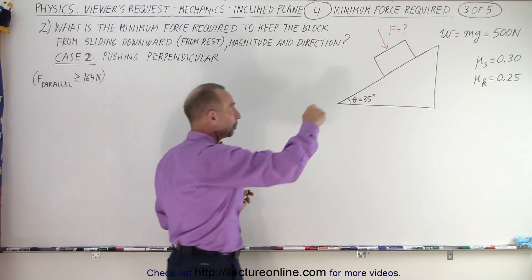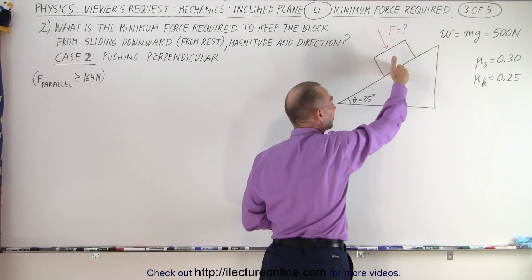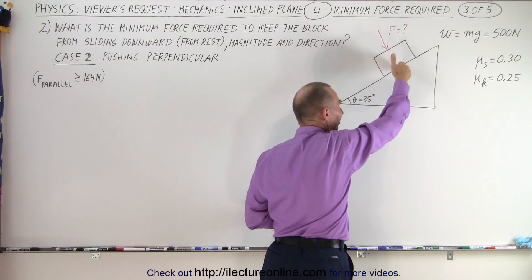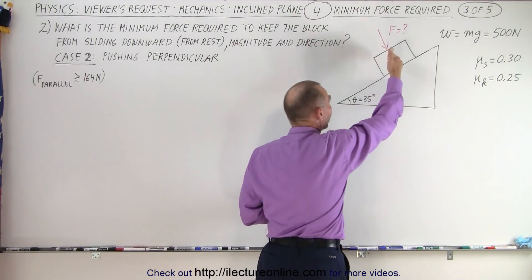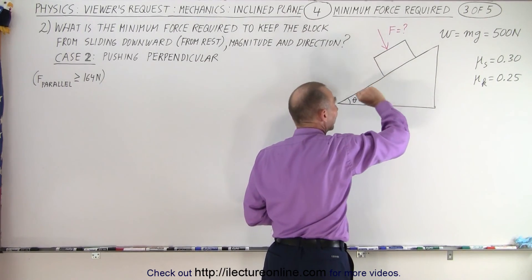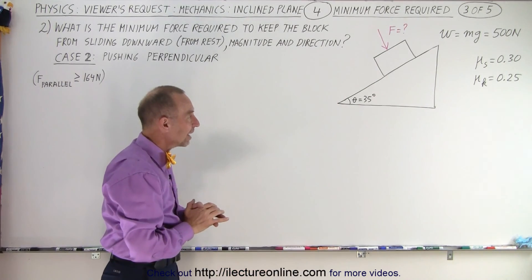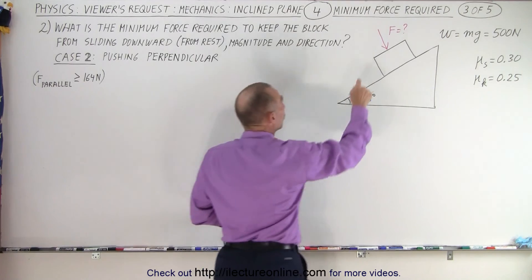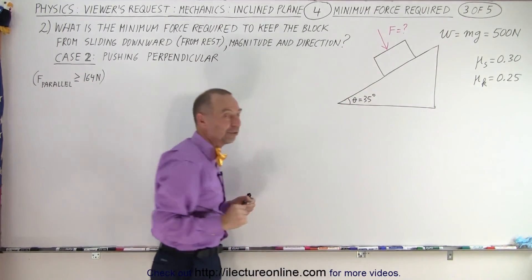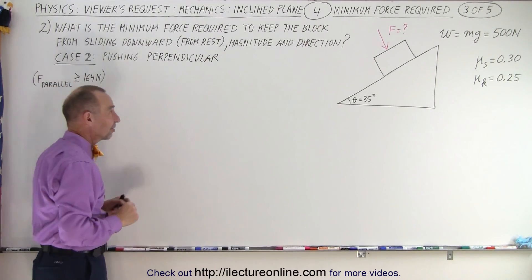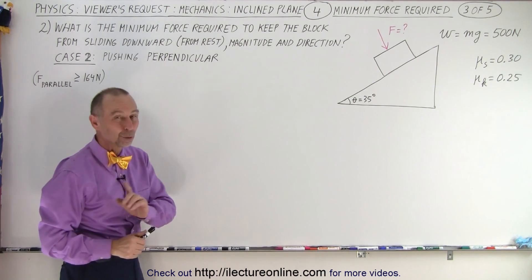By pushing perpendicular against the block, we simply increase the component of the weight that pushes the block against the incline, causing friction to exist. We then cause additional force pushing against the incline, therefore additional friction force, and that should be sufficient to keep the block from sliding down. Will that require a greater force in this direction compared to the parallel force from the previous video, where we needed at least 164 newtons? Well, we're going to find out.